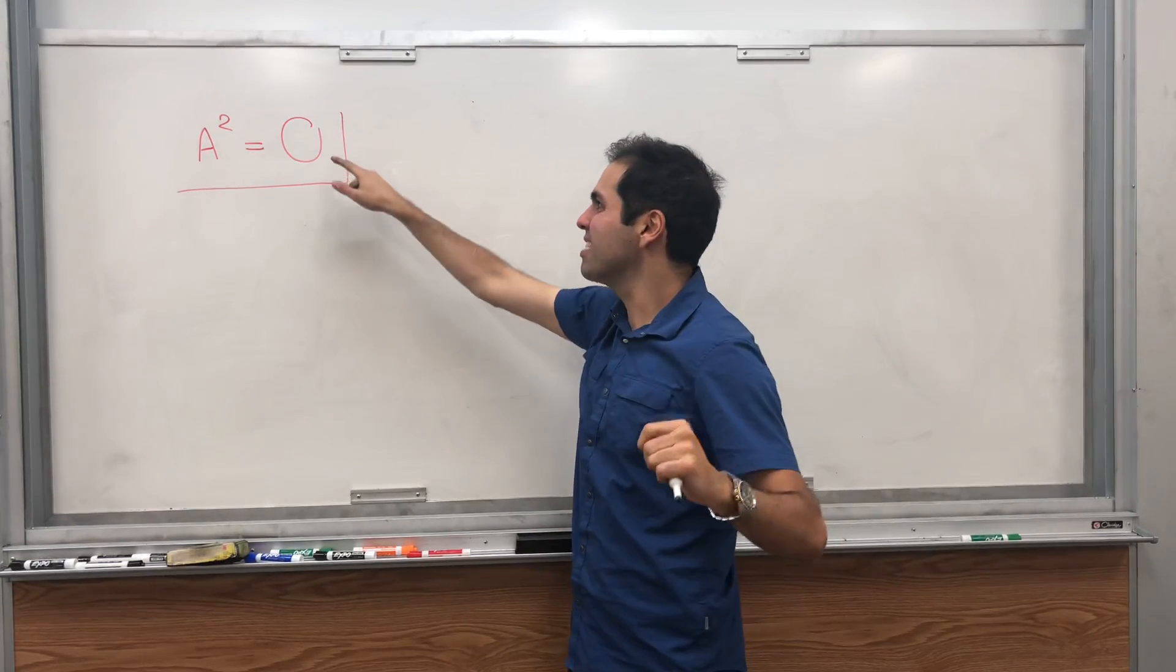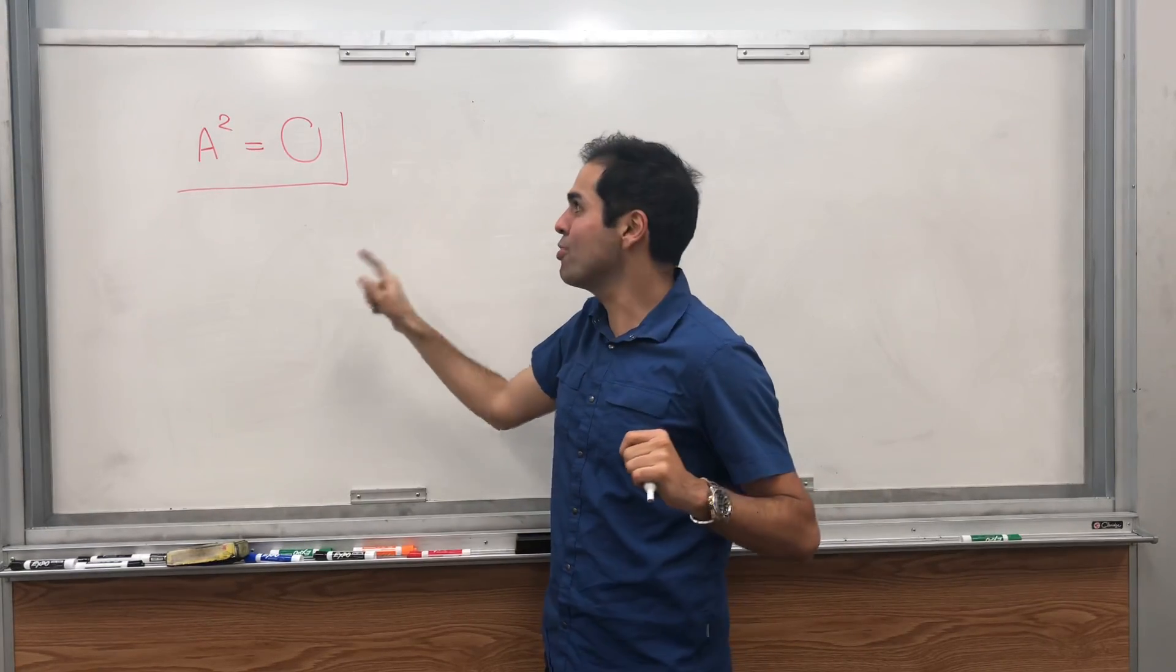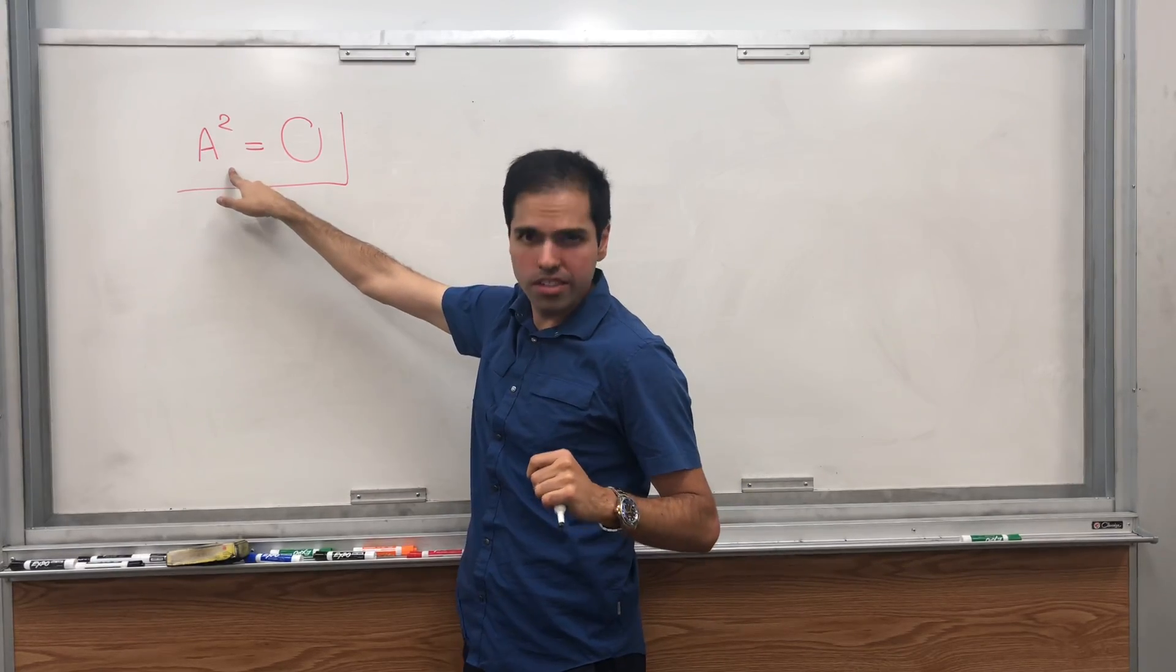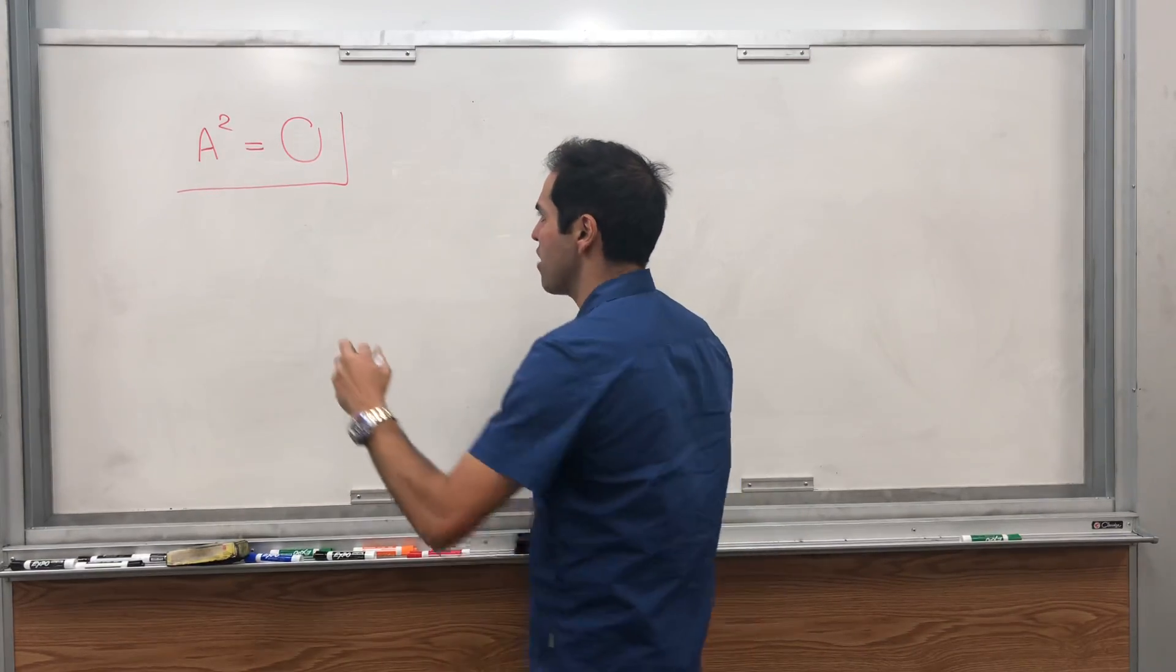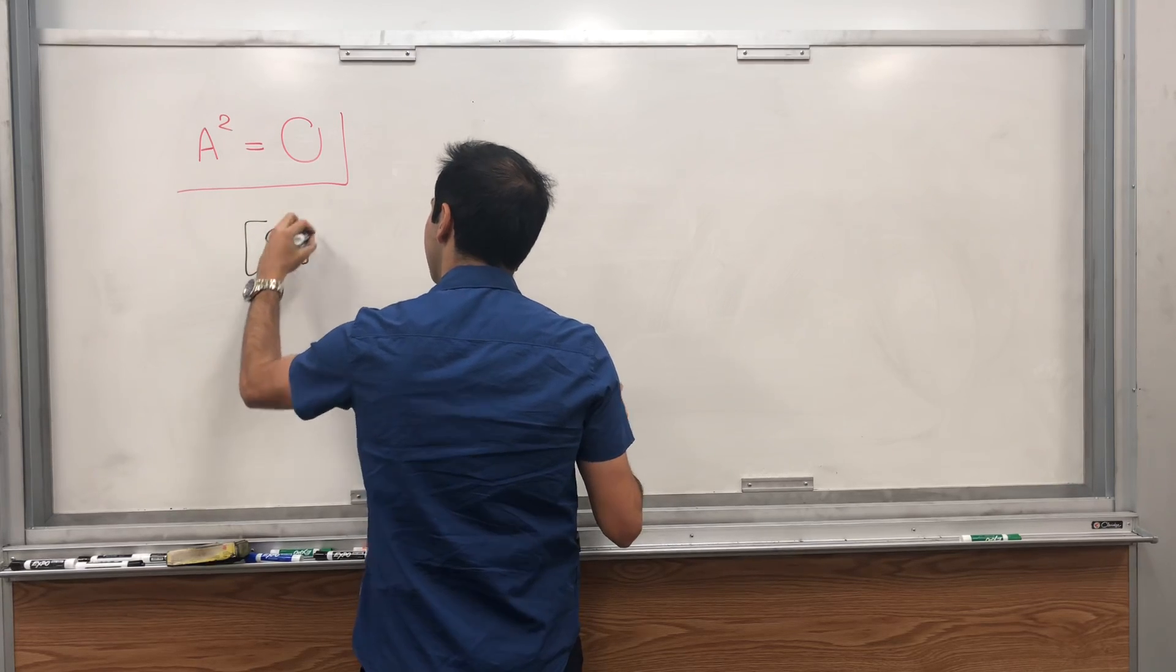And the first thing to understand is, unlike real numbers, matrices behave weirdly, because there are certainly non-zero matrices whose square is zero, for example, this matrix.